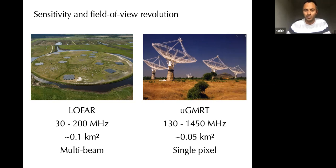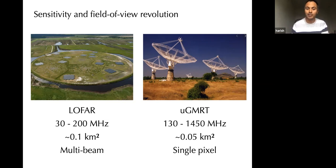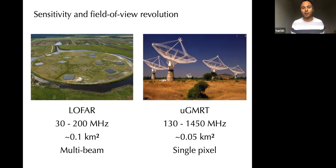LOFAR is a software telescope — unlike a dish you physically point at the sky, LOFAR does electronic pointing. Because of that, you can look in multiple directions simultaneously. This addresses the patience problem: you can observe multiple stars at the same time, drastically cutting down the telescope time needed to make discoveries. LOFAR also has a huge field of view — so many stars in the nearby universe fall within each LOFAR pointing. There are on the order of 100 stars in every LOFAR pointing, giving a 100-times boost.